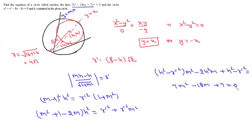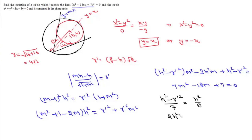Both equations represent the same pair of lines, so by comparing coefficients: (h² - r'²)/7 = h²/9 = (h² - r'²)/7. From this we can write 9h² - 7h² = 9r'², giving 2h² = 9r'².